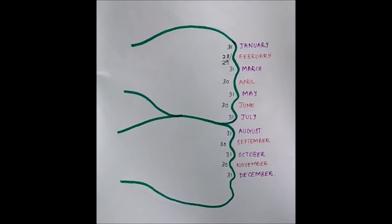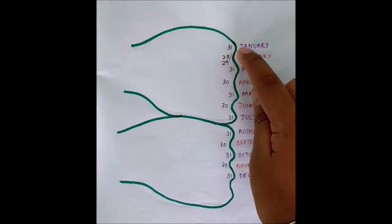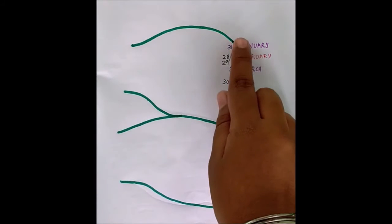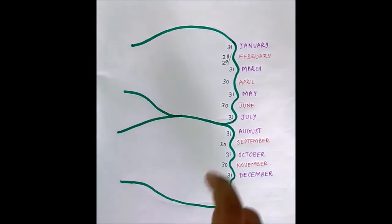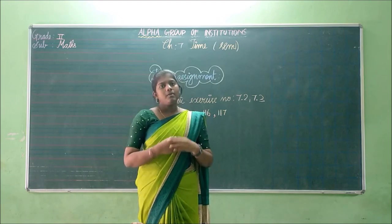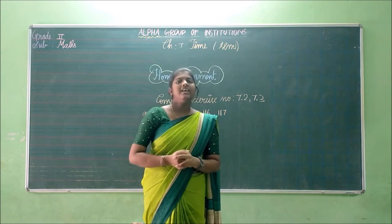Do you understand, children? Shall we once again recollect it? This bulging region is known as knuckles and this lower part is known as grooves. The months that lie on the knuckles will have 31 days, and the months that lie on the grooves will have 30 days. And the one exception we have is February — it will have 28 or 29 days. I hope no one will forget this, because we have learnt it using our hand in a very easy way. Hope you all enjoyed this activity. We will meet in the next class. Have a nice little break. Thank you all.